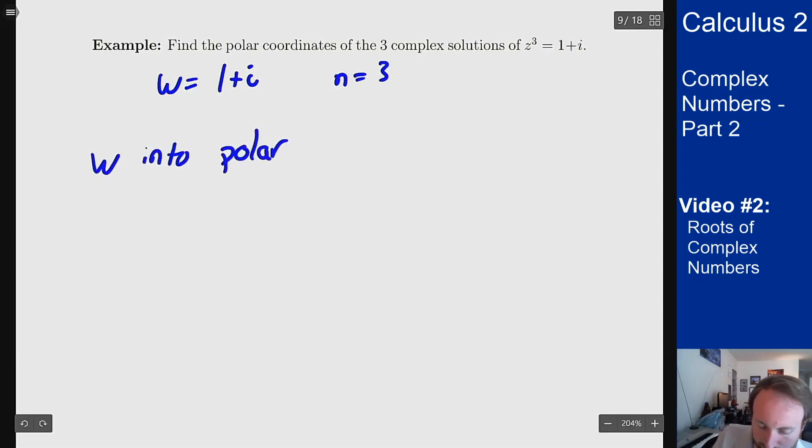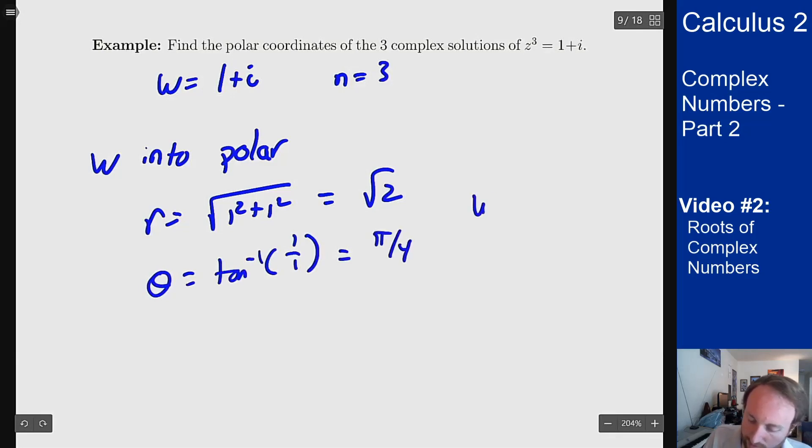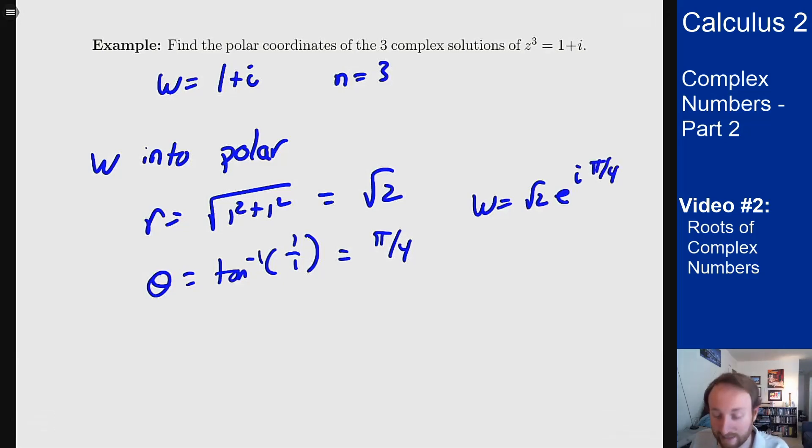So what I do is I first need to convert w into polar coordinates. So r should be the square root of 1 squared plus 1 squared which is root 2 and theta should be the inverse tangent of 1 over 1 which is pi over 4. So my w is root 2 e to the i pi over 4 and I want to find the three different solutions that I get to z cubed equaling this w.